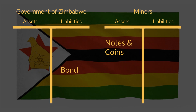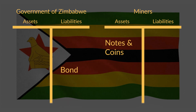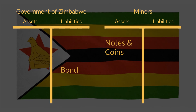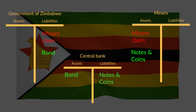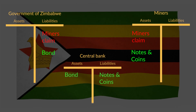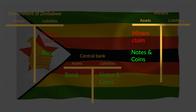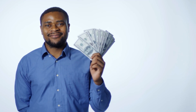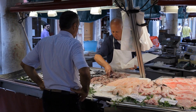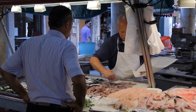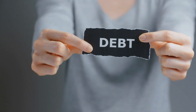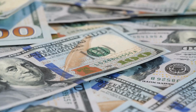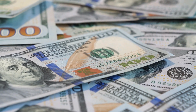But hold on — what has really changed? Doesn't the government of Zimbabwe effectively own its central bank? Indeed it does. So what has really changed through money printing? Well, in practice this is a rather big change for the mine owners, because the claims on the central bank are money. In step 5, they can now use these notes and coins to buy stuff from other people. Now you understand the basic mechanics behind money printing: it transformed an informal type of government debt — the claims of these miners — into a formal type of government debt: money.